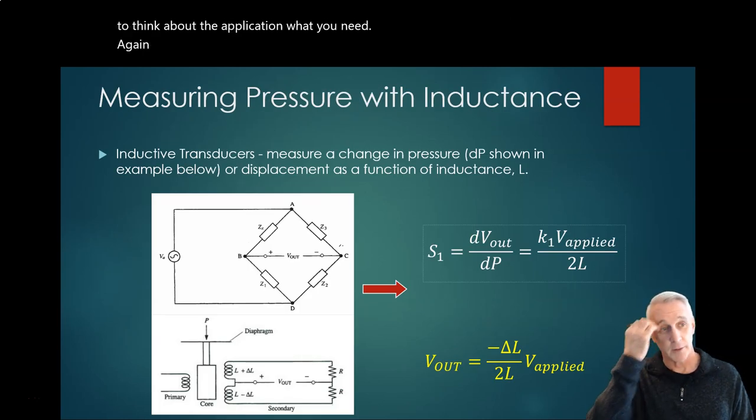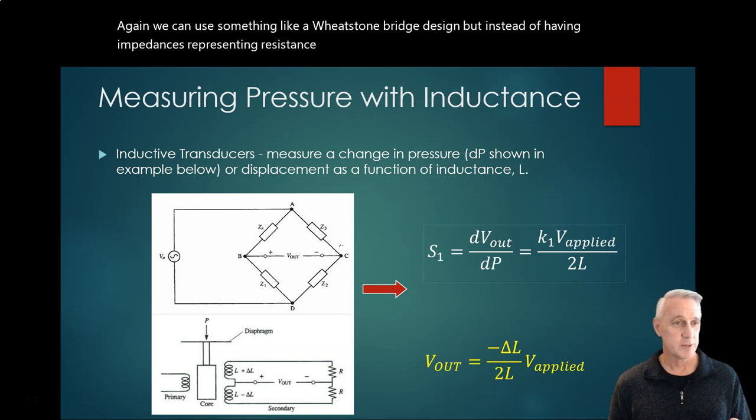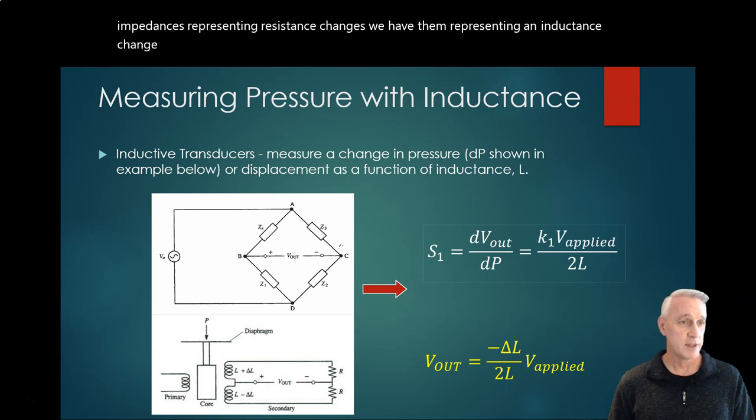Again, we can use something like a Wheatstone bridge design, but instead of having impedances representing resistance changes, we have them representing an inductance change. We'll use the impedance of Zx, and one of those can be an inductor.